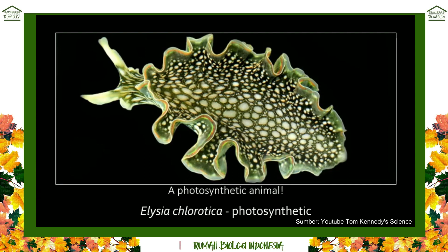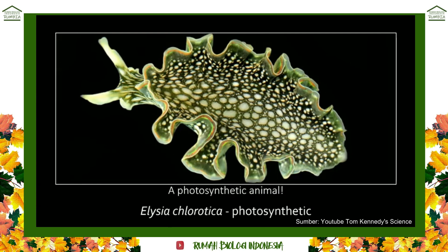We've always learned that plants are photosynthetic and animals are heterotrophic — we have to eat to get our food. Well, here is a photosynthetic animal. Notice it's green — it's a sea slug called Elysia chlorotica. When this animal eats green algae, it takes the chloroplasts and incorporates them into its own tissues. It can't survive solely on photosynthesis, but it can go a long time between feedings.